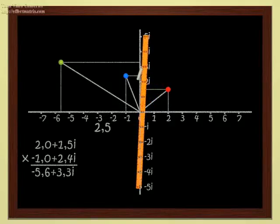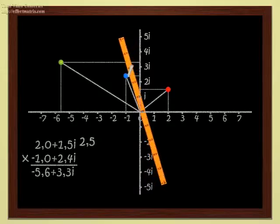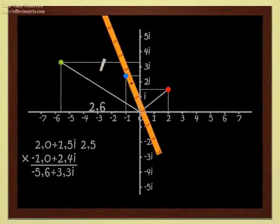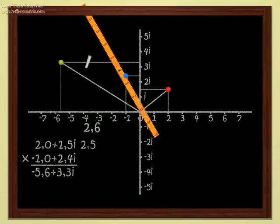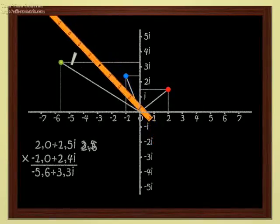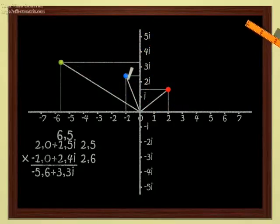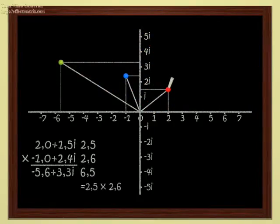The modulus of 2 plus 1.5i is therefore 2.5. For the blue point, I get 2.6. And for the green point, which is the product of the two points, I have 6.5. As a rule, the modulus of a product of two complex numbers is just the product of the moduli of the two numbers.